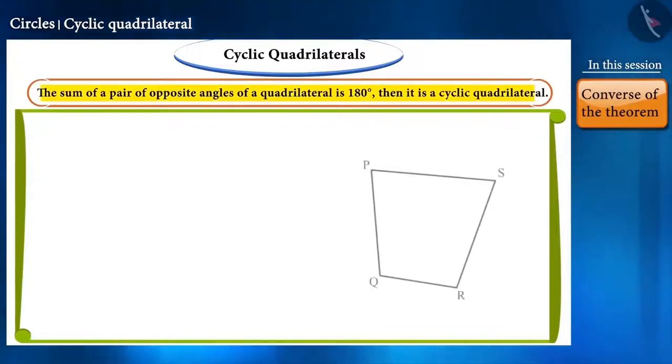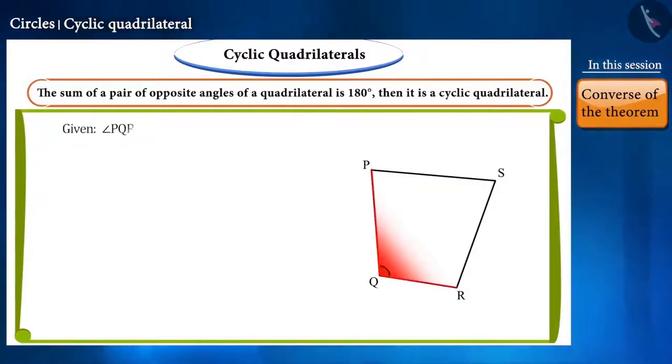According to the statement, we will draw a quadrilateral PQRS in which the sum of a pair of opposite angles is 180 degrees. That is, we can say that the sum of angle PQR and angle PSR is 180 degrees. So will PQRS be a cyclic quadrilateral?